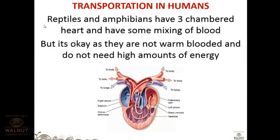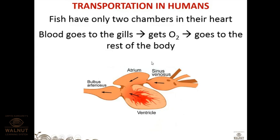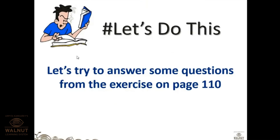Reptiles and amphibians have three-chambered hearts, and some mixing is allowed since they do not perform at the same activity level. An exception among reptiles is the crocodile, which has a four-chambered heart. Fishes (Pisces) have only two-chambered hearts, so there is a lot of mixing — but that is acceptable given their lower energy requirements.